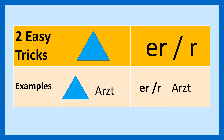The first trick is to put a blue triangle in front of the noun. For example, a blue triangle Arzt means der Arzt. The second trick is to write ER or AR in front of the noun. For example, ER ARZT or AR ARZT, which means der Arzt.